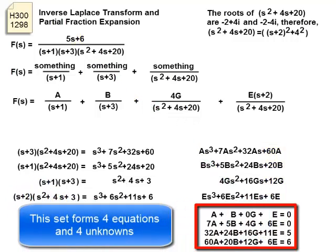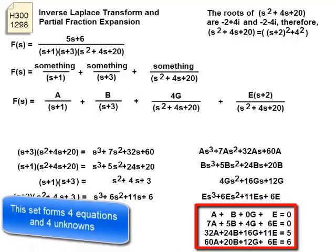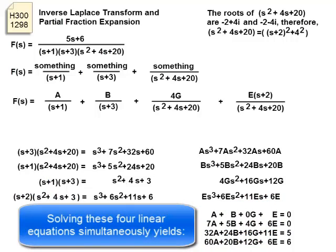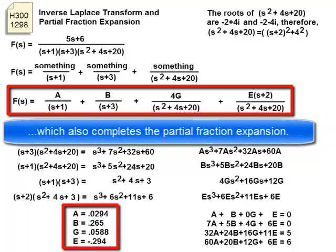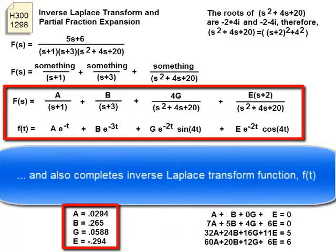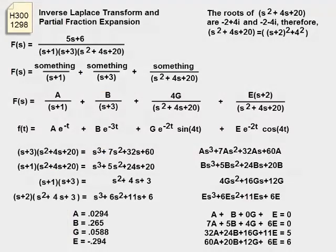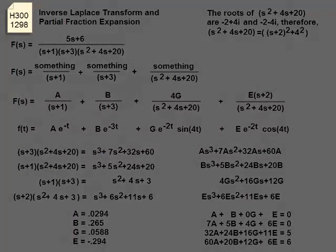This set forms four equations and four unknowns. Solving these four linear equations simultaneously yields the values of A, B, G, and E, which also completes the partial fraction expansion and also completes the inverse Laplace transform function f(t). It's straightforward.